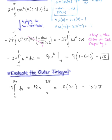Plugging back into the outer integral, we have 18 times the integral from 0 to 2π dv, which evaluates to 18v from 0 to 2π, giving 18 · 2π = 36π. This is the outward flux of the vector field across the oriented surface of the sphere centered at the origin with radius ρ = 3.